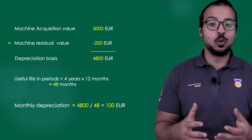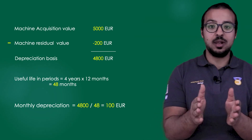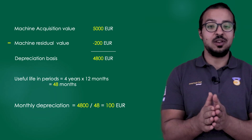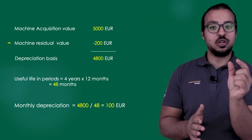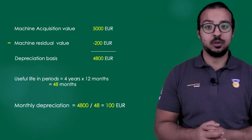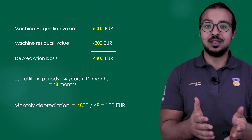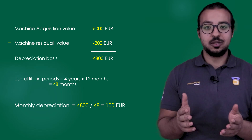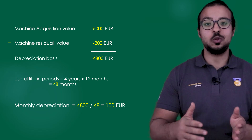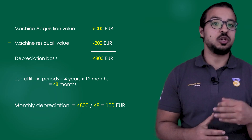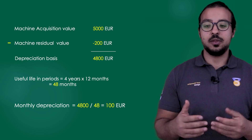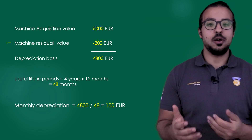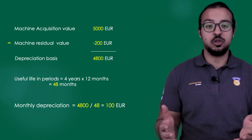The depreciation method we use to calculate the depreciation — in our example we took the full depreciation base and divided it by the number of periods in the useful life, getting a fixed share for every period. This is called the straight-line method. These are called depreciation methods, or in SAP they are also called depreciation keys. There are many other methods available — for example, the double declining method, the diminishing value method, and many others. I will leave links in the description if you are interested to explore.